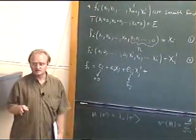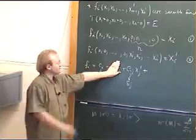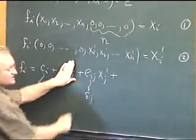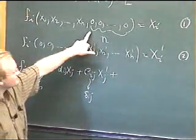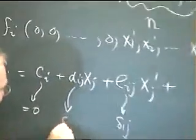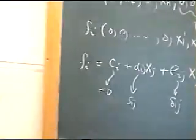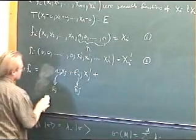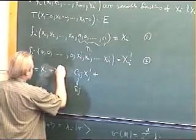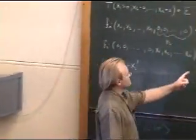If we put the x primes to zero, that gives us a second argument that c must be 0, and now dij must also equal delta ij. So I'll fix up my expansion: there's no ci; I should just have xi plus xi prime. At this stage I've written down f to linear order — it has to look like that to be consistent with these two conditions.